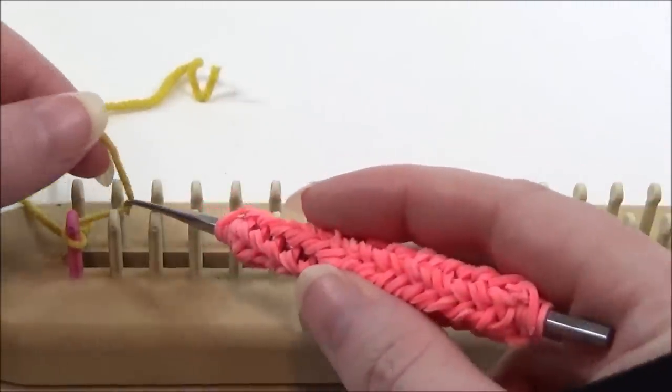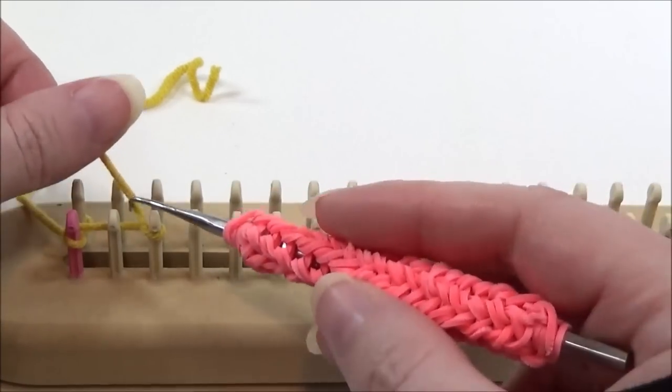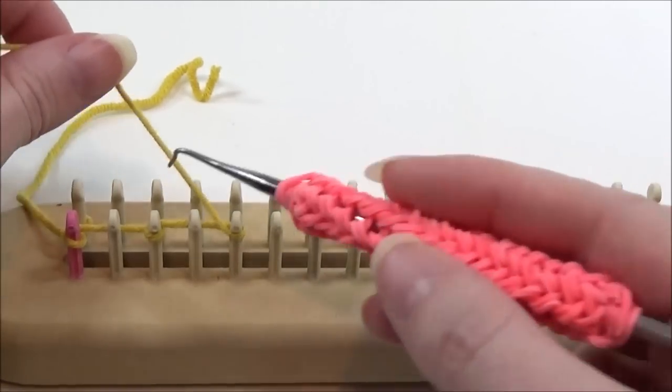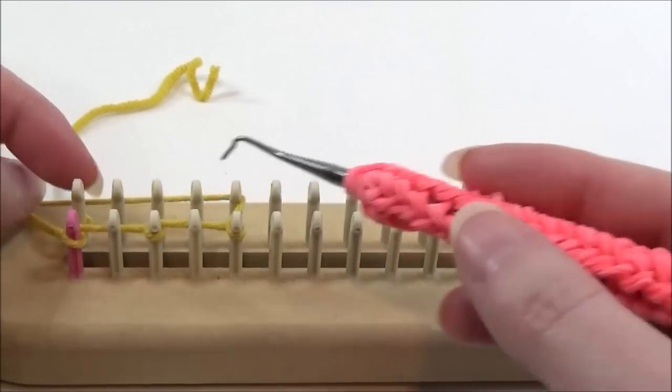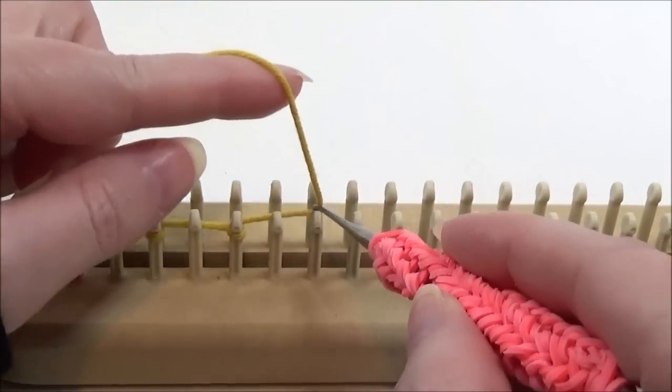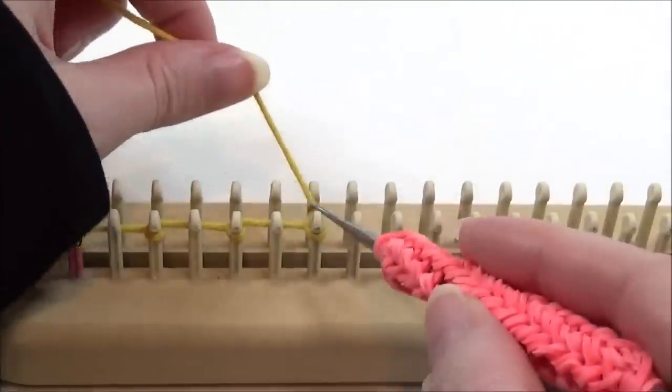The non-loopy cast-on calls for you to e-wrap every other peg. To e-wrap, you would go around the back, then around the front, and around the back again.